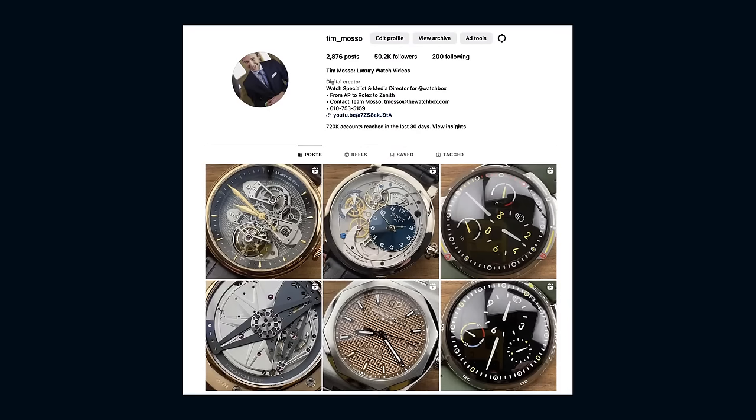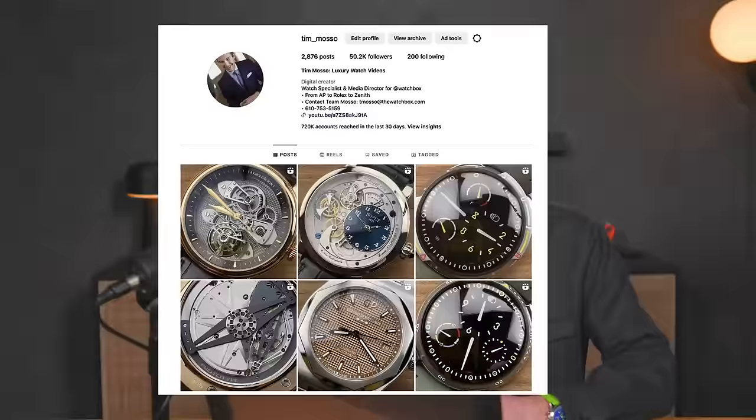If you enjoy this program, check my Instagram, Tim underscore Masso, where I now have almost 3,000 one-minute reviews of my favorite watches from our collection. Some aren't even listed on our site. I update it more than once a day on average, so the content comes fast and furious.